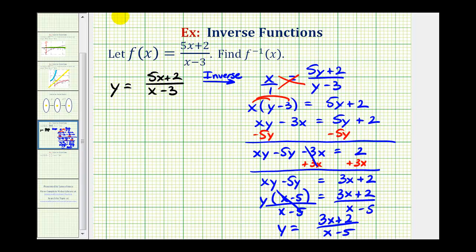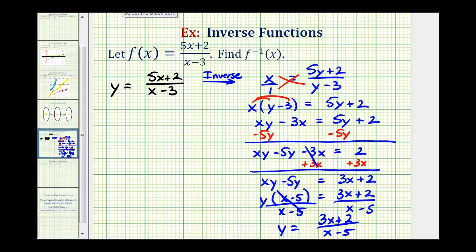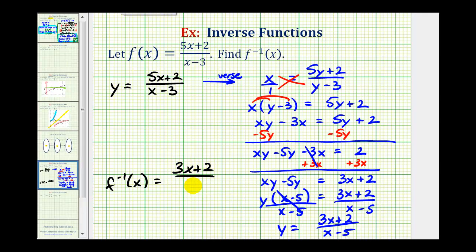So for our last step, let's go ahead and replace y with inverse function notation. f inverse of x is equal to quantity three x plus two divided by the quantity x minus five. So here's the inverse function that we're asked to find.